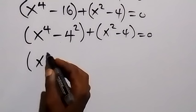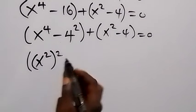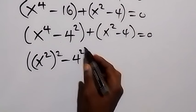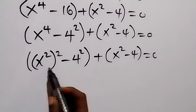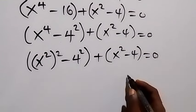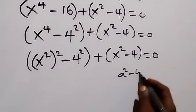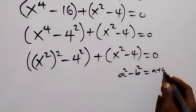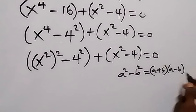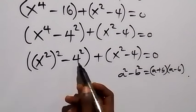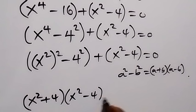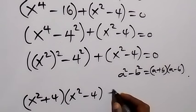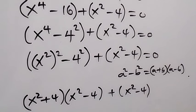We have x raised to power 4 minus 4 squared. Here we apply the identity a squared minus b squared equals a plus b times a minus b. In this case we treat x squared as a and 4 as b. So this becomes x squared plus 4 multiplied by x squared minus 4, and then plus x squared minus 4, which equals to zero.